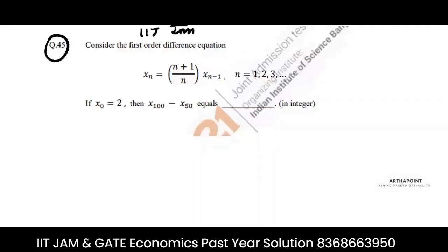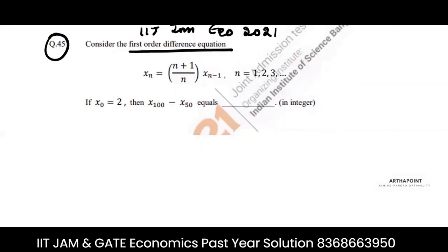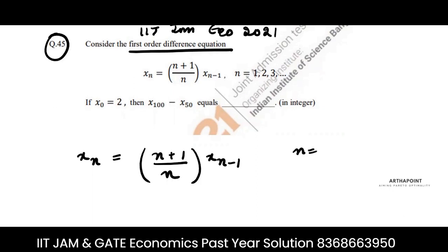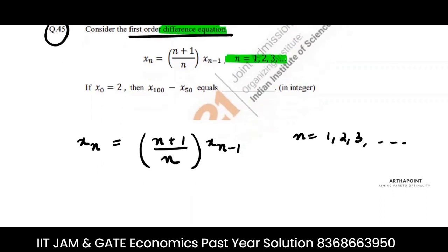This is question number 45 of IIT JAM Economics 2021. The question gives a first-order difference equation: xₙ = (n+1)/n · xₙ₋₁. Since it's a difference equation, n takes only discrete values — n = 1, 2, 3, and so on.